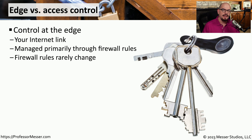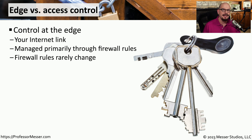The first place to look at security in most organizations is at the edge. The edge is the part of the network where the inside of the network meets the outside or internet side of the network. Usually we protect the edge through the use of a firewall that will monitor all traffic going from the inside to the outside and vice versa. This is usually managed through a number of security rules that are on the firewall itself, and those rules tend to be very static.